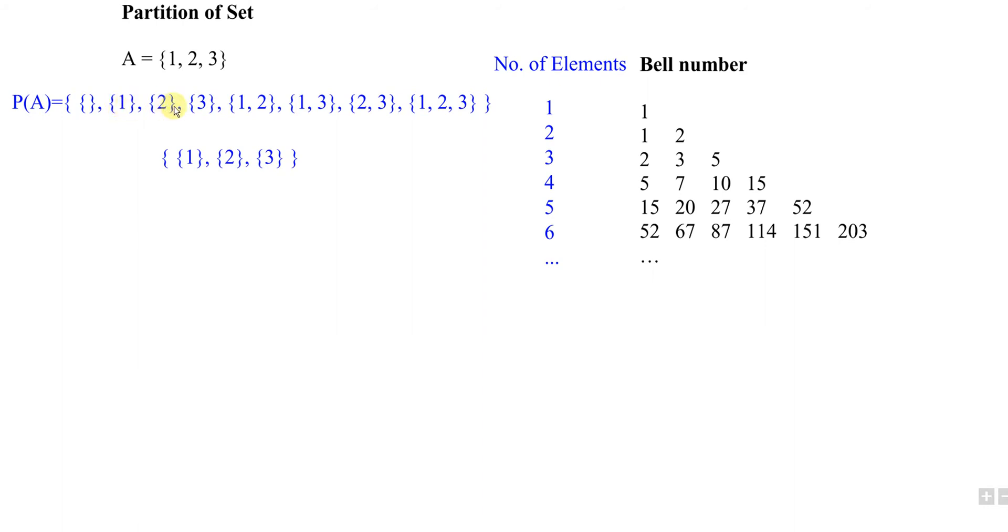Then if we take {1} and we don't want to take {2, 3}, we could have {1} and {2, 3}. This is another combination. We repeat the same step - take {2} with another combination.